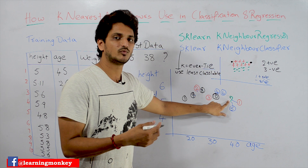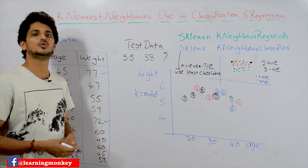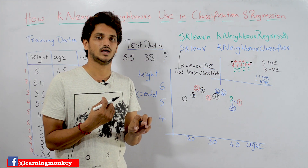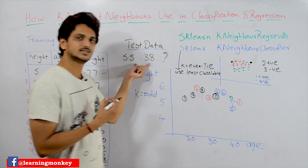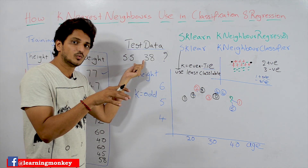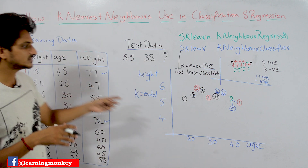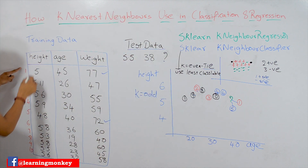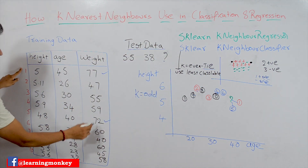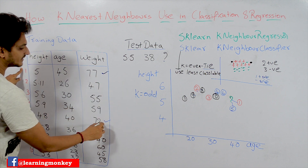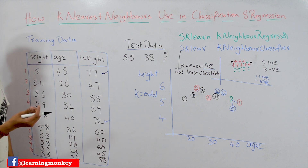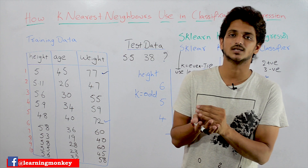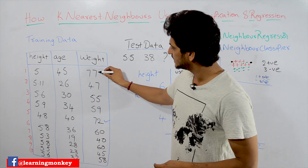How K-Nearest Neighbors works: let's assume k is equal to 2. It will pick the two nearest neighbors from the training dataset. It will identify two nearest data points in the training data. Let's assume that data points 1 and 5 are the nearest. The values of weight for points 1 and 5 are 77 and 72. So K-Nearest Neighbors on regression models takes the average of those points — 77 and 72.